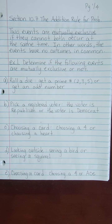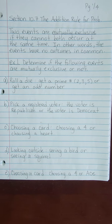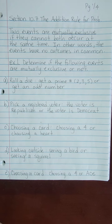This is section 10.7. We are almost through with chapter 10, which is the chapter on probability, and then we get to start the chapter on statistics. Two events are mutually exclusive if they cannot both occur at the same time, meaning they have no outcomes in common. It's not possible for these to happen simultaneously.